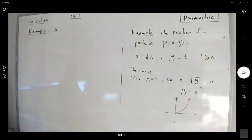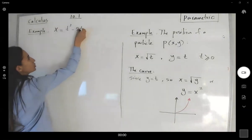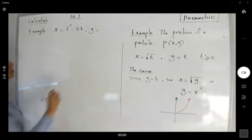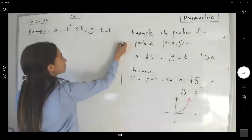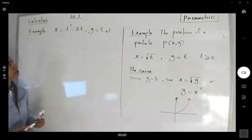equals t squared minus 2t, and y is given to us as t plus 1. Okay, let's see what we can do here.